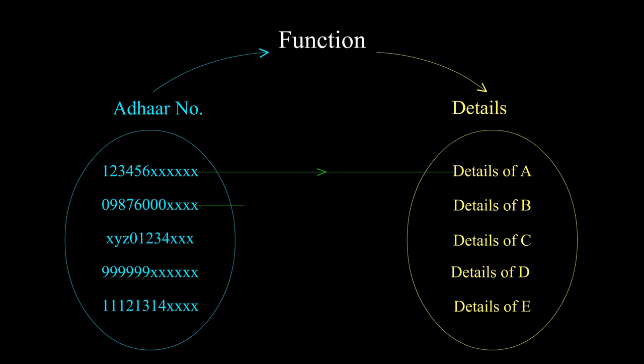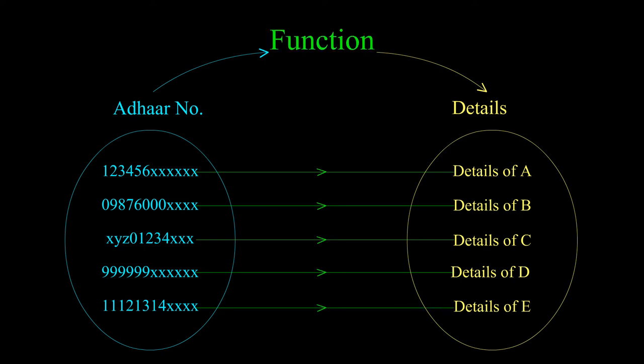If person B enters his Aadhaar number, then his corresponding details will be known. Here you can note that corresponding to one Aadhaar number, only one identity will be mapped, which is what the definition of function is.